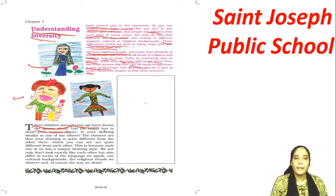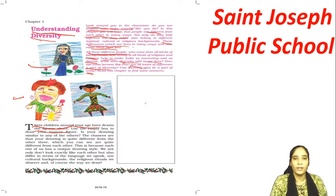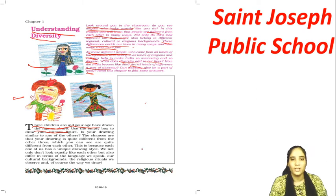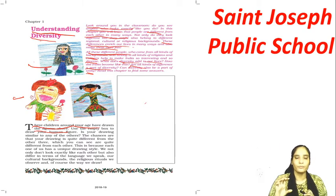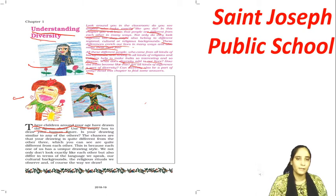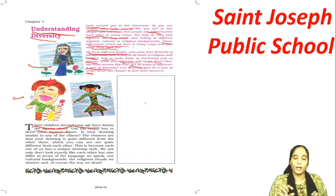Now use the empty box to draw your own human figure. You can see an empty box here. What you have to do is draw your picture — whatever you imagine. You have to draw your picture according to your imagination.